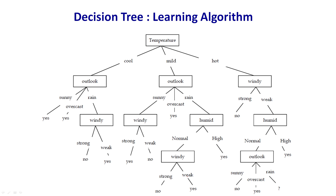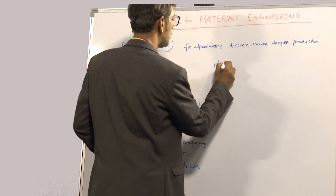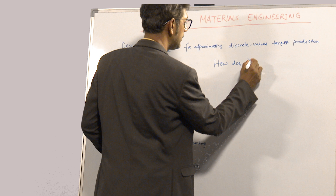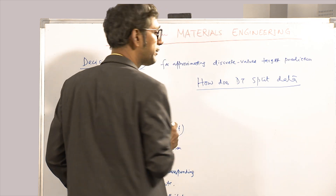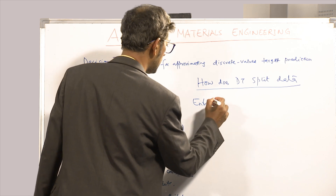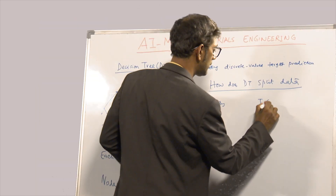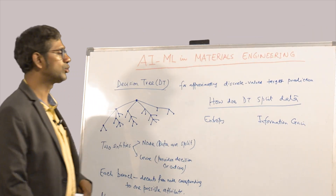There are two parameters which are important for deciding how the decision tree splits data: one is called entropy and the other is called information gain.